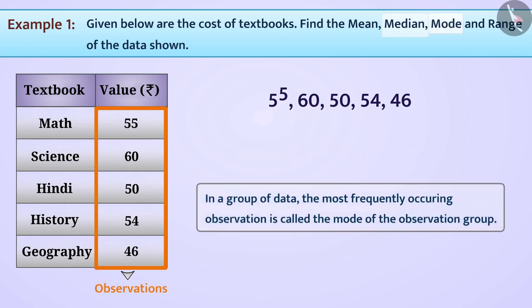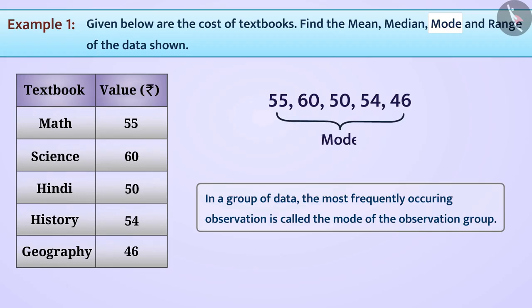Also, we have learned that in a group of data, the most frequently occurring observation is called the mode of the observation group. Looking back at the data provided for the costs of the textbooks, you may see that each observation has occurred at most once. Do you think we can infer that all observations in this data are modes? Well, yes, they are.